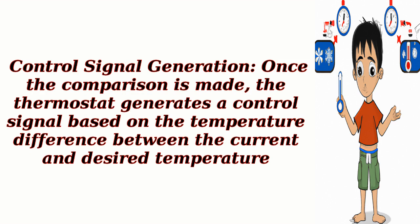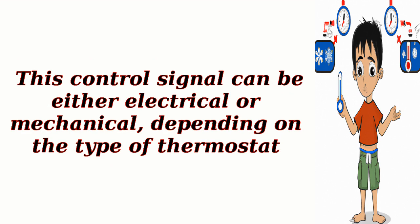The thermostat generates a control signal based on the temperature difference between the current and desired temperature. This control signal can be either electrical or mechanical, depending on the type of thermostat.